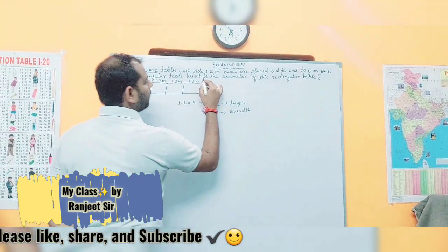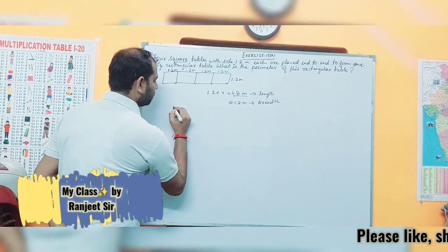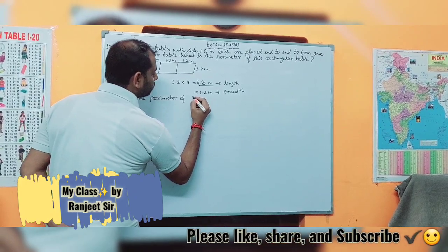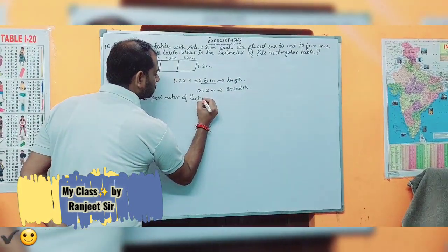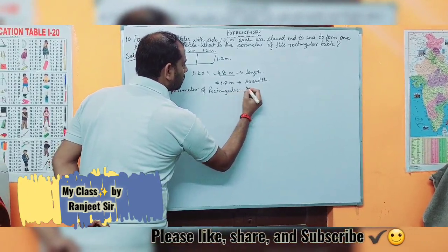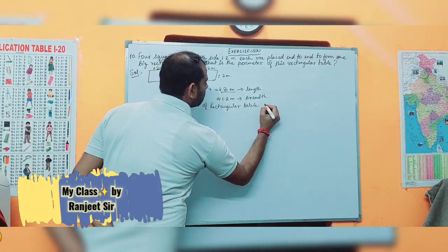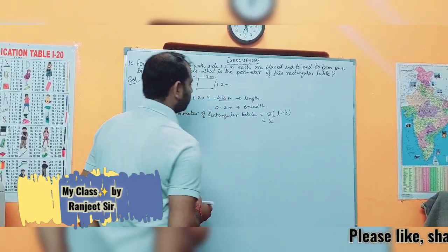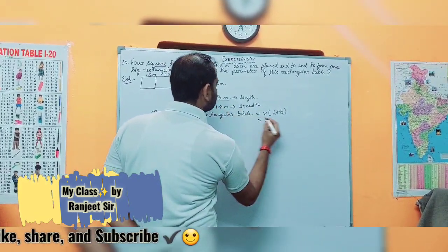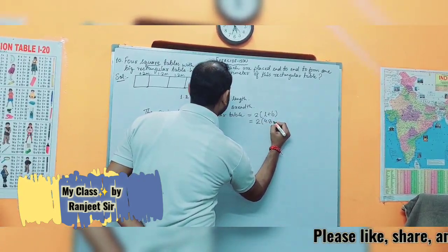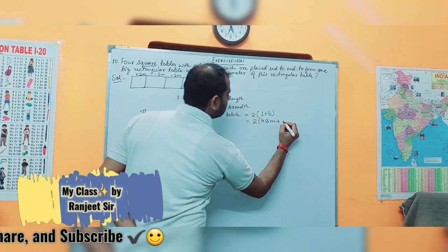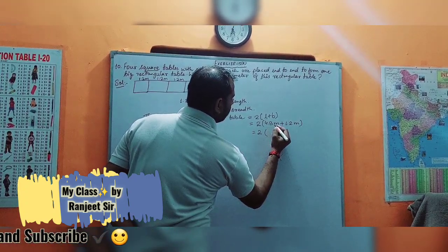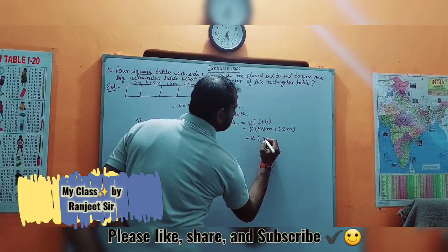So we have to find the perimeter of the rectangular table. The perimeter of the rectangle equals 2 into (length plus breadth). Putting in the values, the length is 4.8 meter and the breadth is 1.2 meter. So 4.8 plus 1.2 gives us 6 meters.